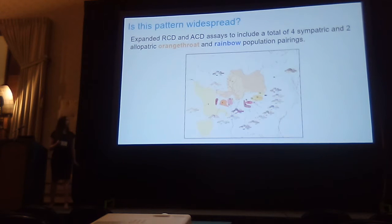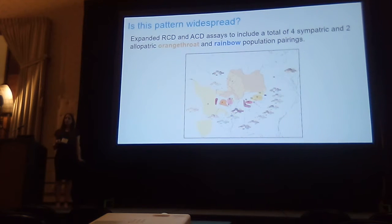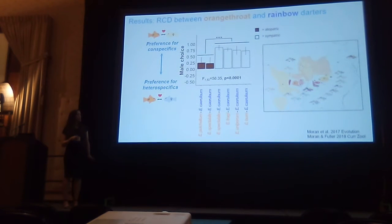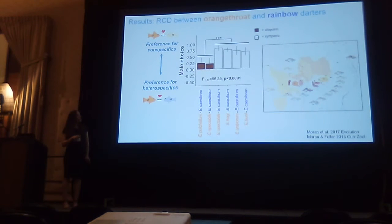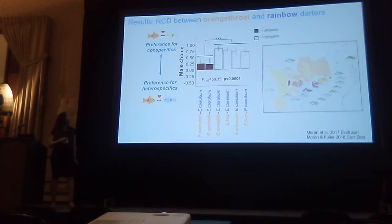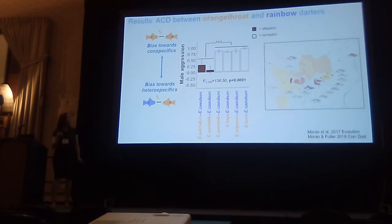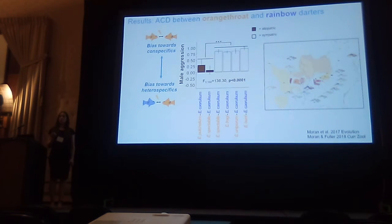I expanded these analyses to include a total of four sympatric and two allopatric population pairings of orange-throat and rainbow darters to see if this pattern is widespread throughout the ranges of these species. On the x-axis I have six different orange-throat/rainbow darter population or species pairings. White bars are sympatric and black bars are allopatric. On the y-axis I have male mating preference — increasing towards one is preference for conspecifics, down towards negative one is preference for heterospecifics. Across the board there's a really strong, consistent increased preference for conspecifics in sympatry that is not present in allopatry. We saw a very similar pattern for agonistic character displacement as well — males are really good at recognizing their own species in sympatry, but not in allopatry.